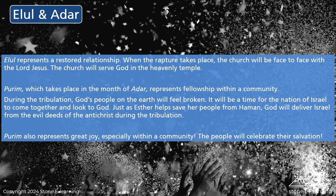Elul represents a restored relationship — when the rapture takes place, the church will be face to face with the Lord Jesus. The church will serve God in the heavenly temple. Purim, which takes place in the month of Adar, represents fellowship within a community. During the tribulation, God's people on the earth will feel broken. It will be a time for the nation of Israel to come together and look to God. Just as Esther helped save her people from Haman, God will deliver Israel from the evil deeds of the Antichrist during the tribulation. Purim represents great joy, especially within a community — the people will celebrate their salvation.